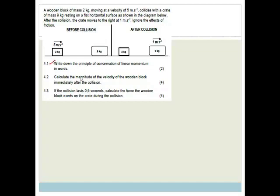Now it says calculate the magnitude of the velocity of the wooden block immediately after the collision. So here's a wooden block, we're going to say block column B and C for crate. What do we know? We know that P before equals P after. Now we have to write in the letters. We're going to say the mass of the wooden block times the initial velocity of the wooden block, plus the mass of the crate times the initial velocity of the crate is equal to the mass of the block times the final velocity of the block, plus the mass of the crate times the final velocity of the crate.